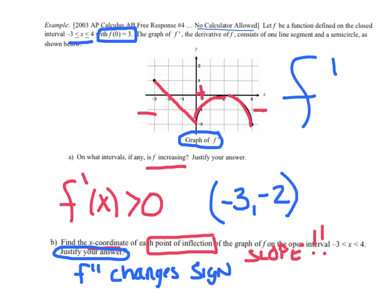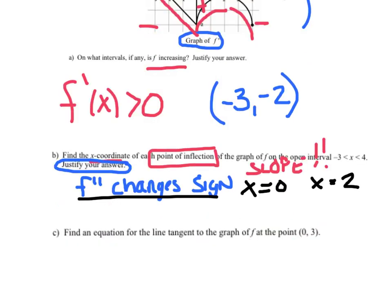When do I have a point of inflection? When did my slopes change signs? I would say at x = 0 and x = 2. And I already have my justification there, f double prime changed signs.